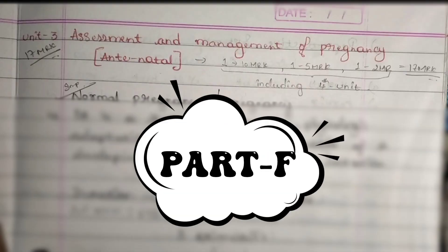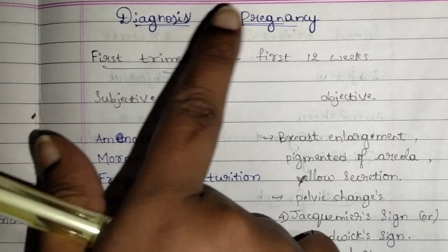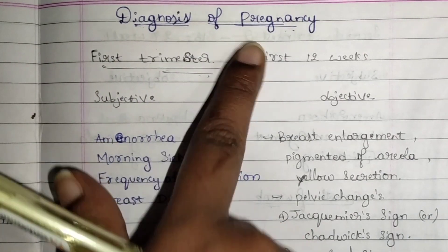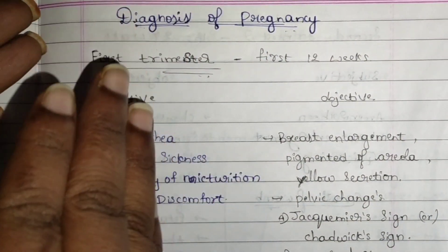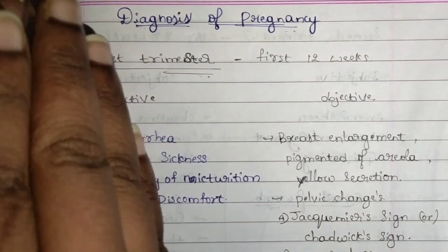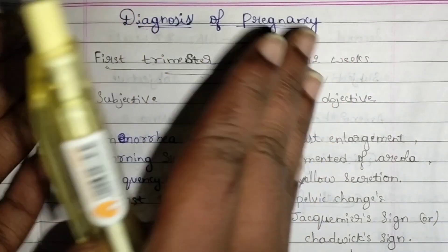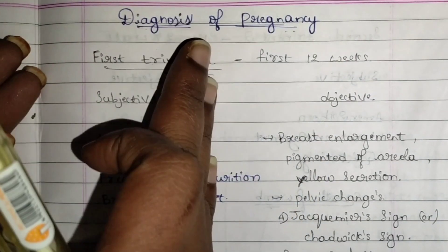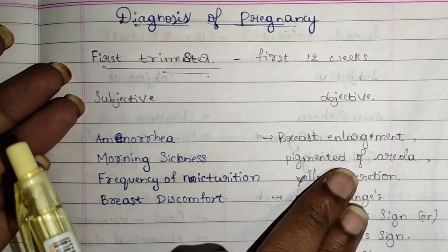Hello guys, it's Unit 3 Part F. Today we're going to see the diagnosis of pregnancy. This diagnosis of pregnancy is based on trimester. The trimester is divided into three types, and each part has its own subjective and objective data.